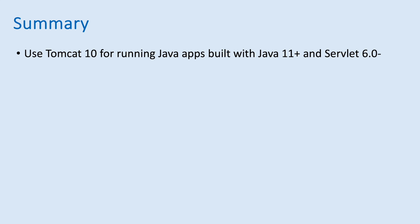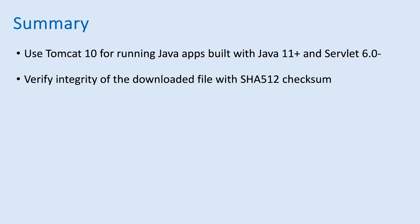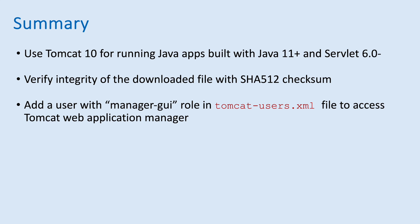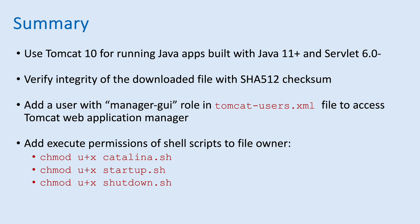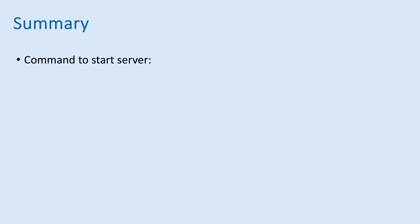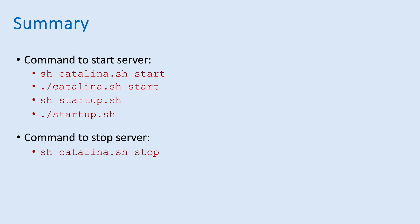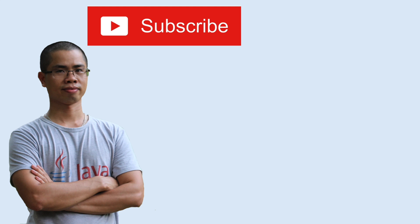Let me sum up the key points: use Tomcat 10 for running Java applications built with Java 11 or later and Servlet 6.0 or older. Verify the integrity of the downloaded file with SHA-512 checksum. Add a user with the manager-gui role in tomcat-users.xml to access the Web Application Manager. Add execute permission to shell scripts for the file owner using: chmod u+x. Here are the commands to start and stop the server. I hope you found this video helpful — please subscribe, like, comment, and share. Thanks for watching.